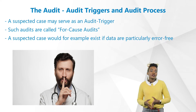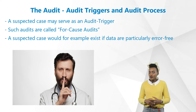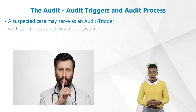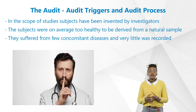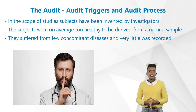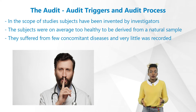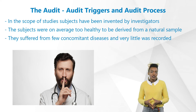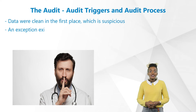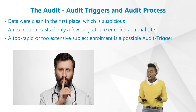A suspected case would be, for example, if the data was particularly error-free and no queries existed — this looks like a fantasy and is questionable. This has already happened: in the scope of studies, subjects have been invented by investigators. These fictitious subjects were on average too healthy to be derived from a natural sample. They apparently suffered from few concomitant diseases, accordingly little parallel medication was listed, and generally very little was recorded, which in turn caused few queries. Hence data were clean in the first place, which is very suspicious.